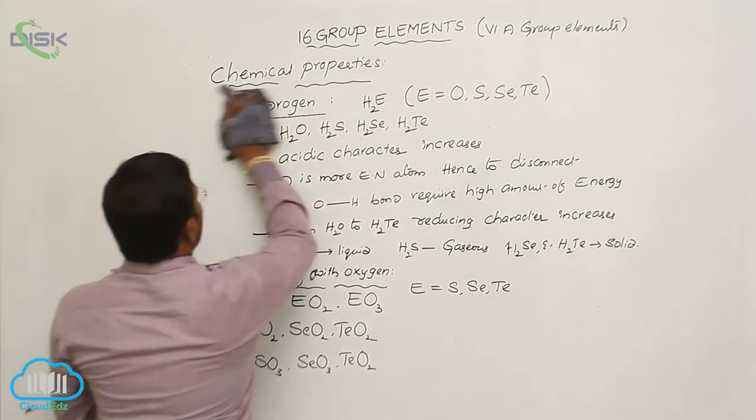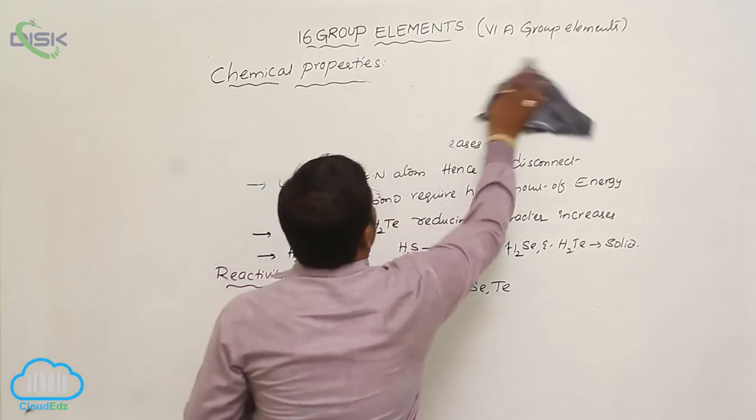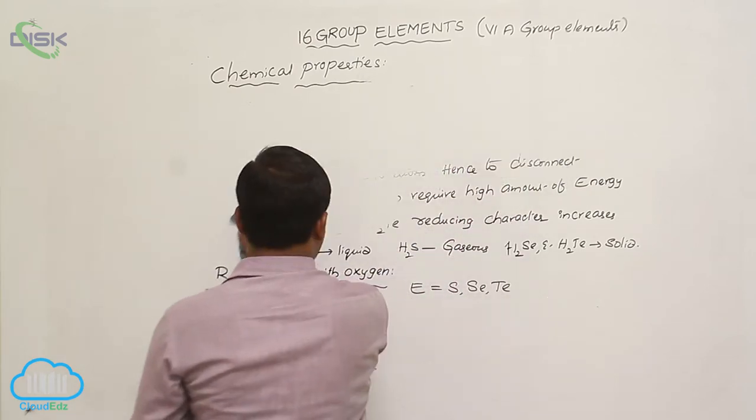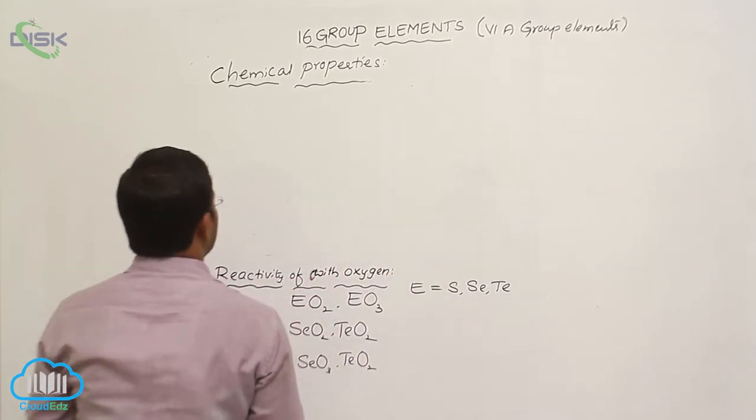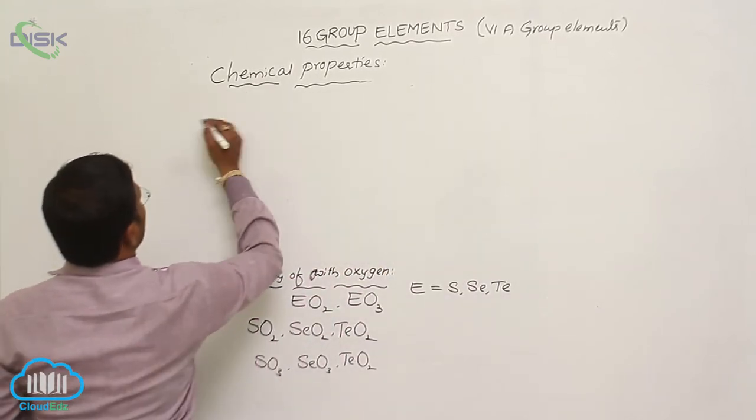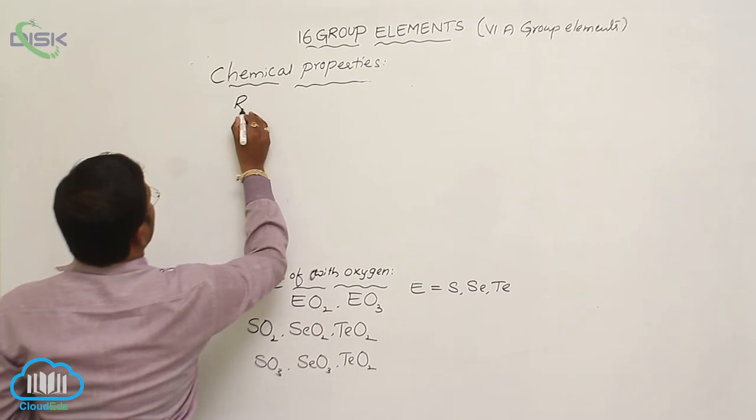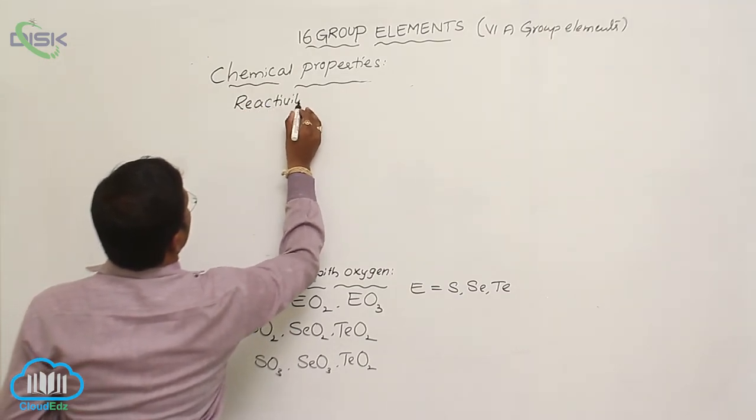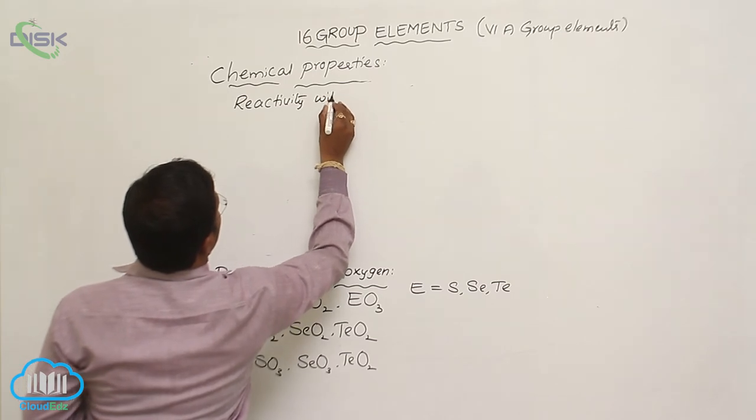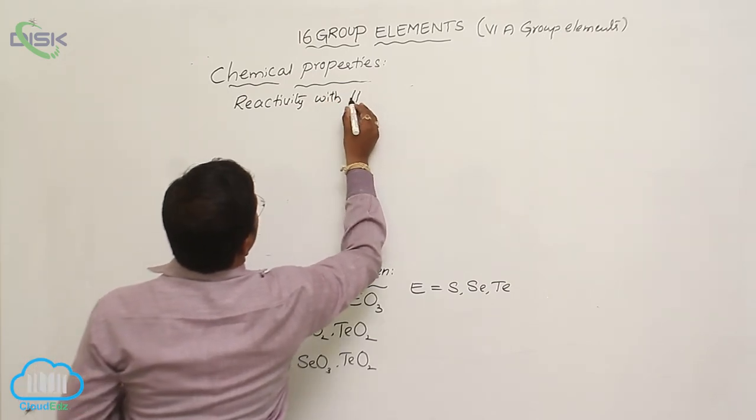The next one: more reaction of 16th group elements with halogens. The 16th group elements can easily react with halogens and produce—reactivity with halogens.